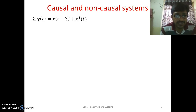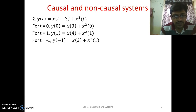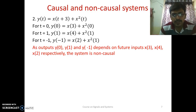Let's take another example: y(t) = x(t+3) + x²(t). For t = 0: y(0) = x(3) + x²(0); for t = 1: y(1) depends on x(4); for t = −1: y(−1) depends on x(2). We can observe that y(0), y(1), and y(−1) depend on future values of input such as x(3), x(4), and x(2) respectively. So the system is non-causal as it depends on future values of input.